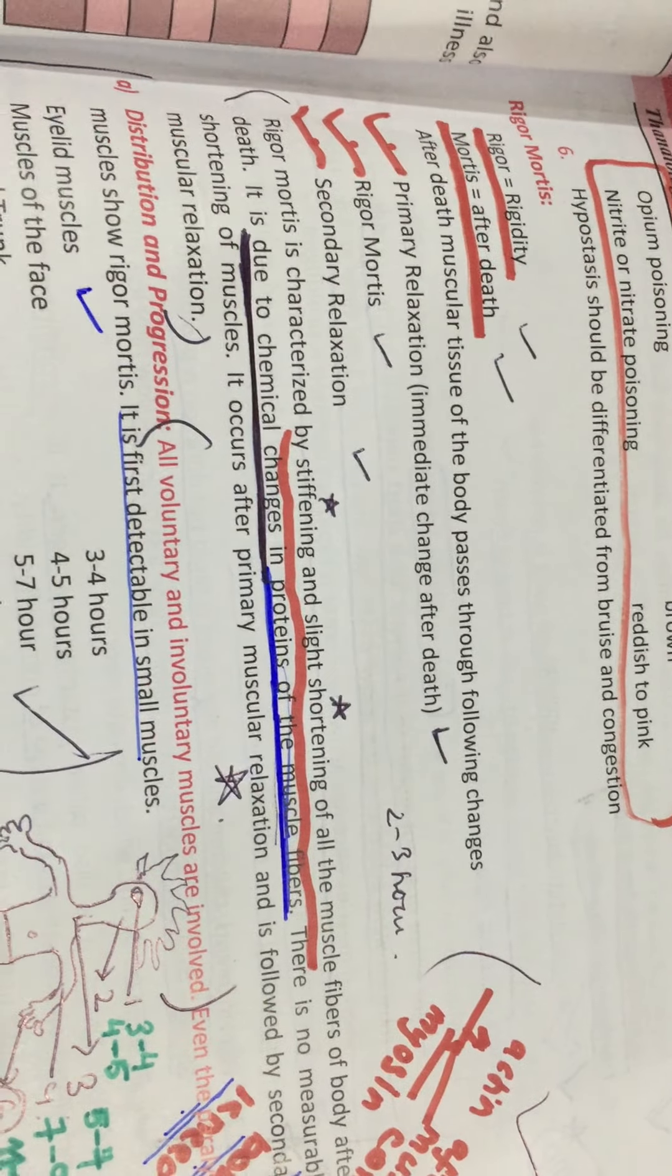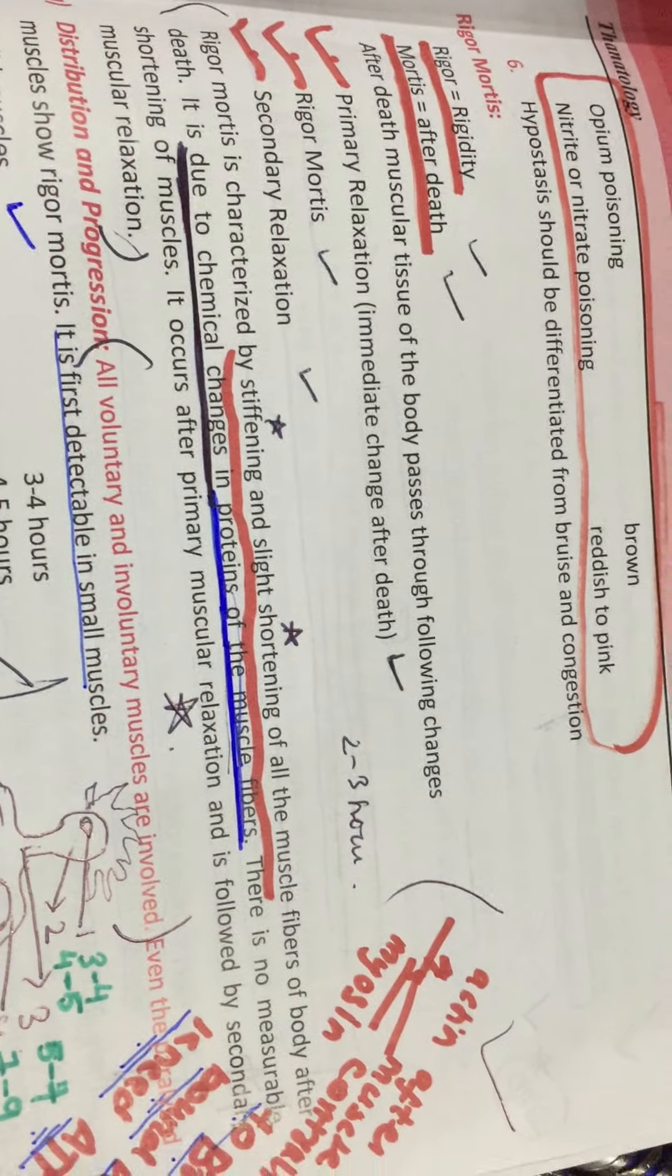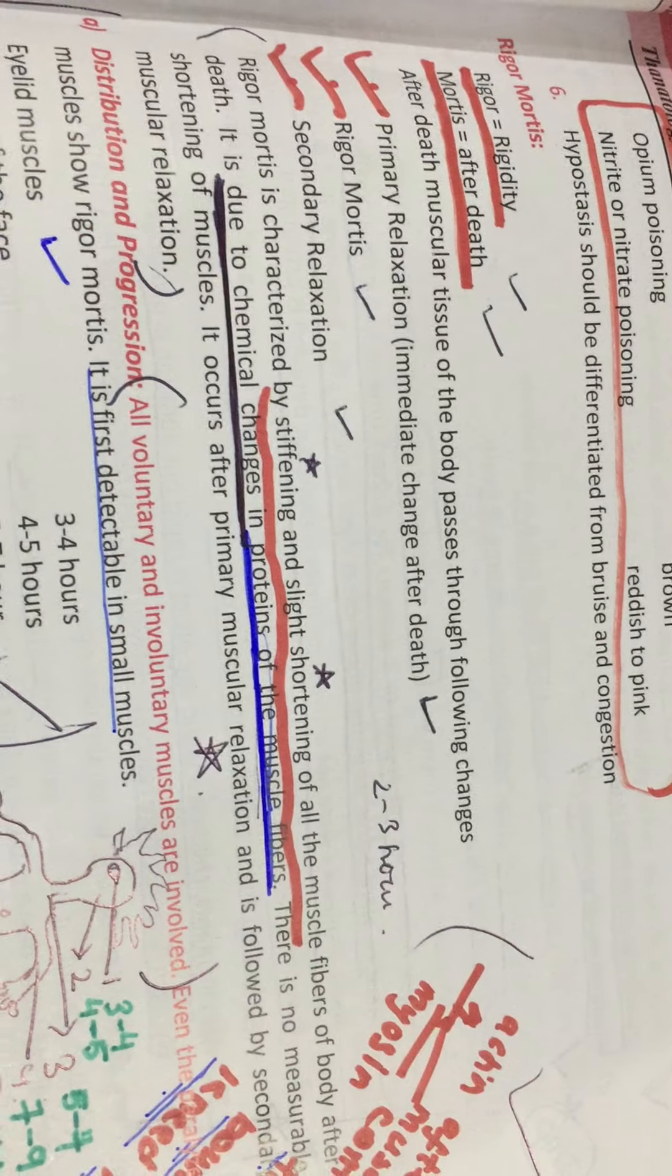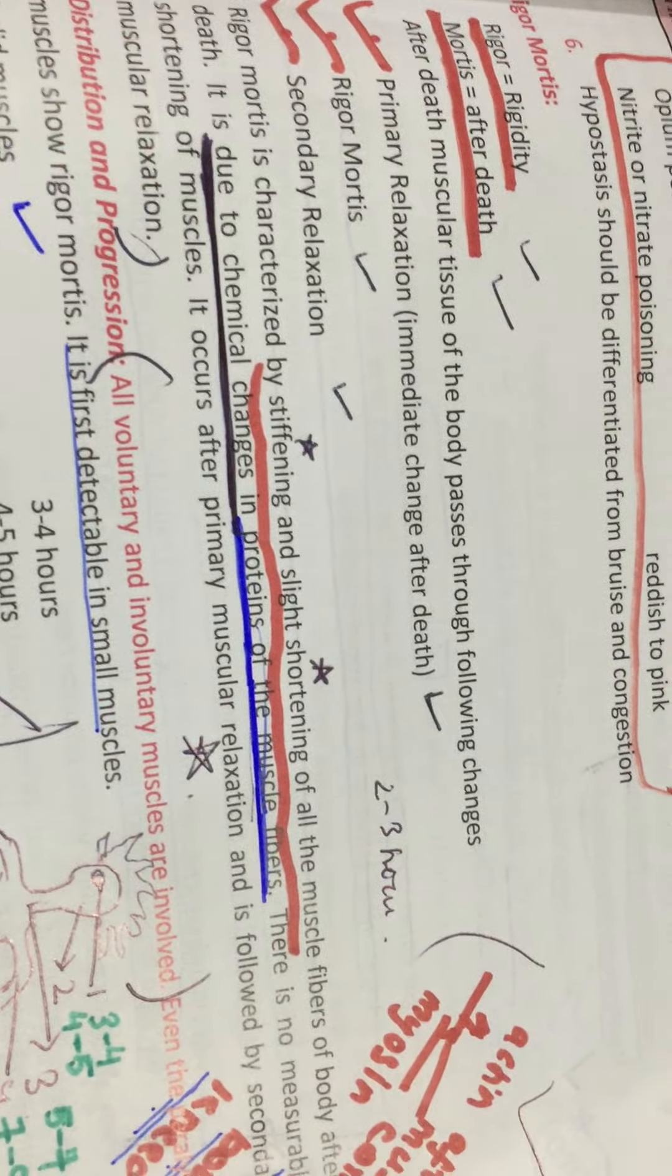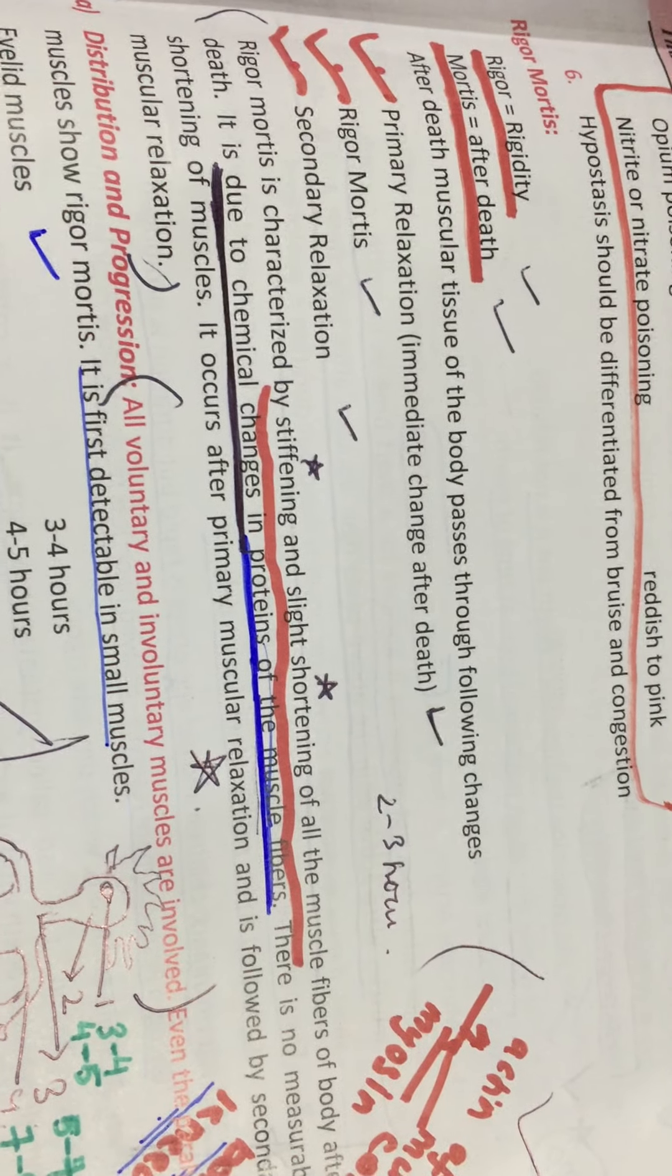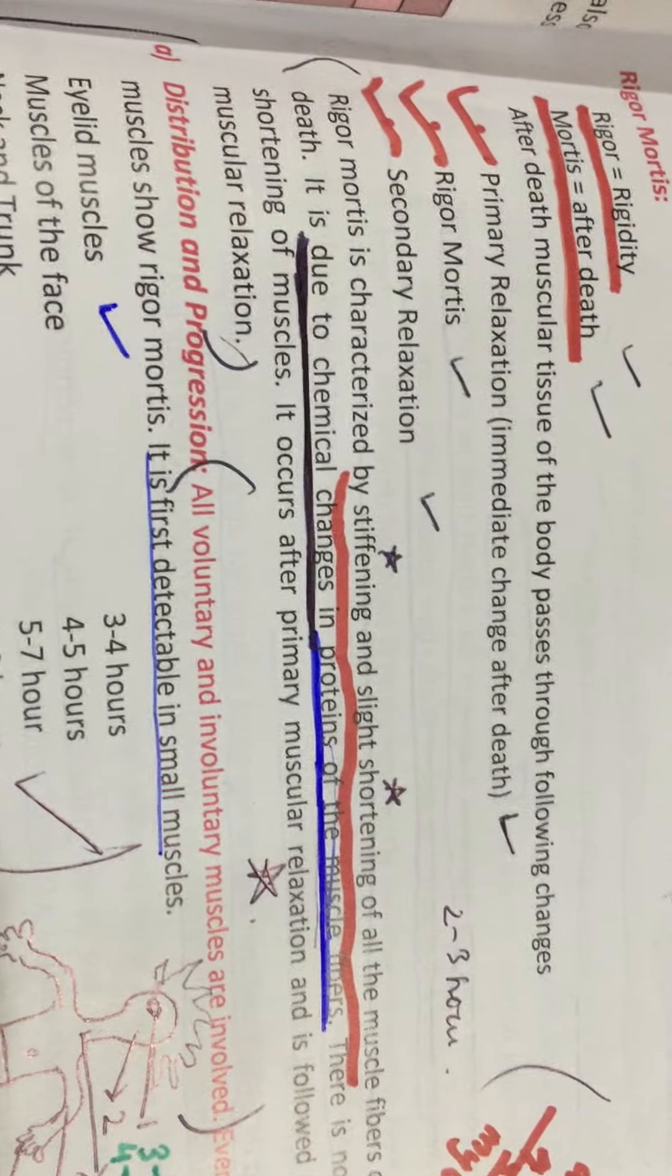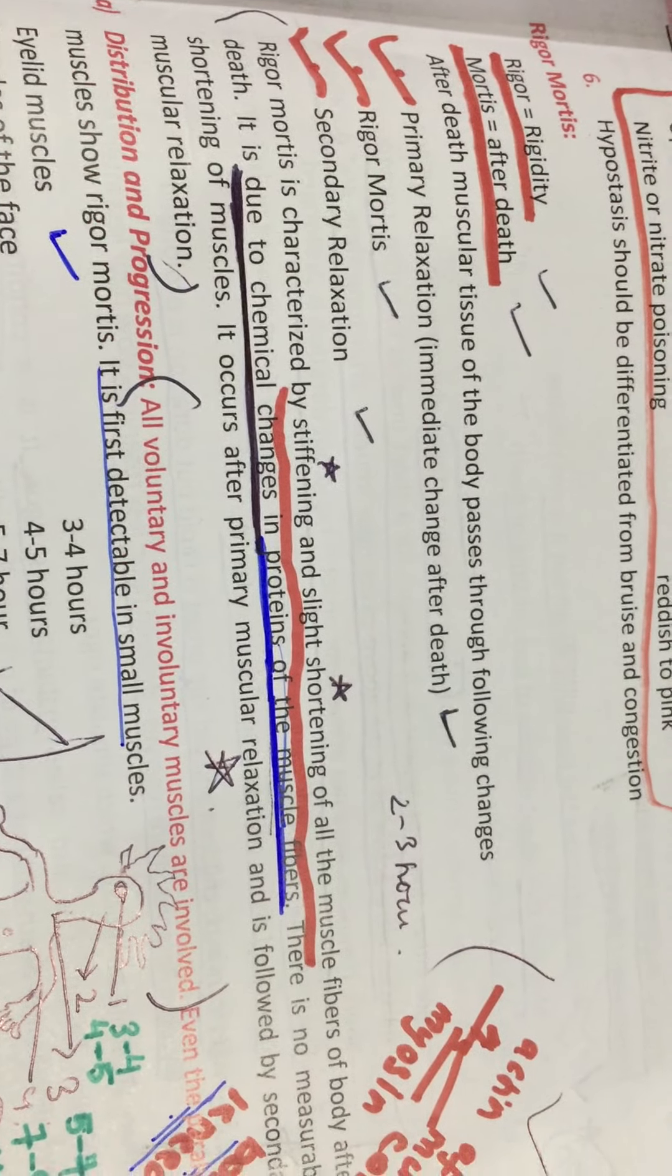Just after death, there is going to be a state of primary relaxation. After some time, there is going to be a stage of rigor mortis, which happens about two to three hours after the death. And then after that, rigor mortis lasts about 12 hours. After that, we have secondary relaxation.